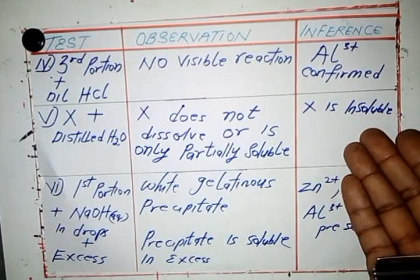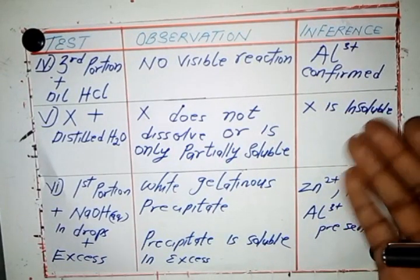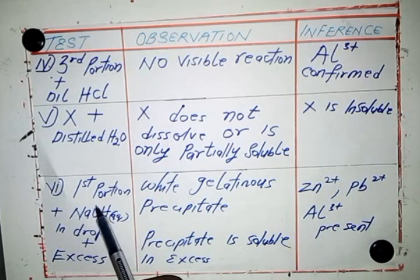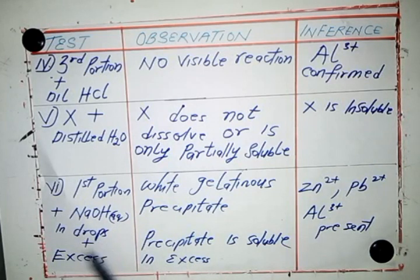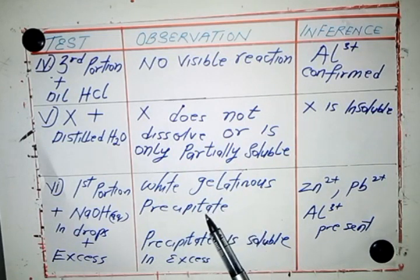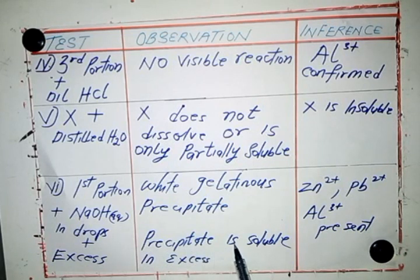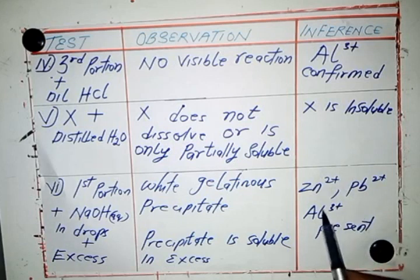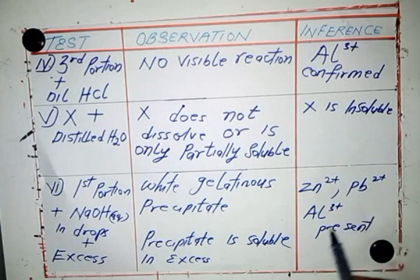First portion of X plus sodium hydroxide in drops, then in excess. As usual, you get a white gelatinous precipitate, and in excess the precipitate is soluble. The inference here, just like the previous ones, is that zinc, lead, and aluminium ions may be present.